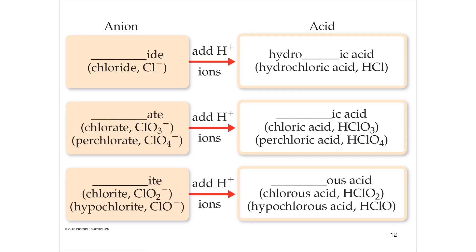Finally, we have acids. An acid is a hydrogen compound named based on the anion it combines with. Hydrogen is always +1. So for H + Cl: chloride (Cl⁻) combined with hydrogen is named with the hydro- prefix plus -ic: hydrochloric acid. An acid can donate a hydrogen, and hydrogen will always appear out front in the formula, so you know it's an acid.